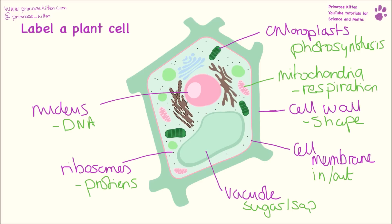Three things that are in a plant cell that aren't in an animal cell are your vacuole, your cell wall, and your chloroplasts.